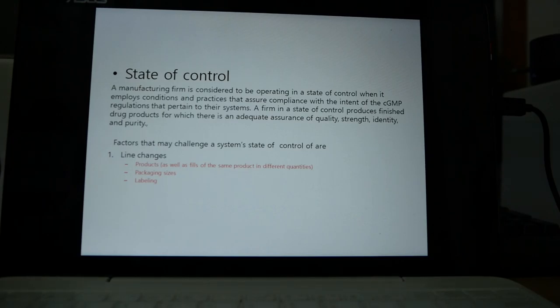What factors can affect state of control? Normally, we think three parts: line change, machine design, and line maintenance. Line change includes long product quantities, long packaging size, long labeling. Long line change can cause deviations, and the deviation affects state of control.